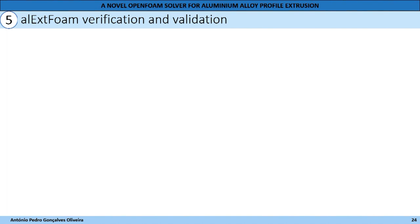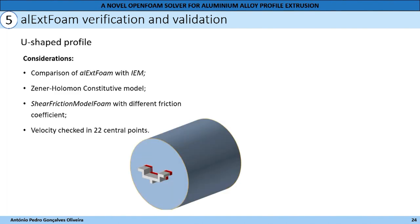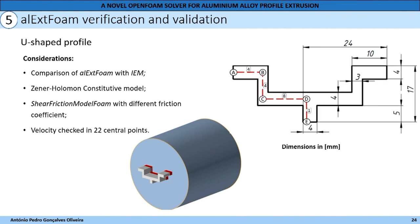Now, the OpenFOAM verification and validation. We will start with the U-shaped extrusion profile, where the goal is to compare OpenFOAM with the Inspire Extrude Metal software. In both cases, the Zener-Hollomon constitutive model was used. However, as a student license was used, the Inspire Extrude Metal software does not allow selection of friction models, so several simulations were carried out with different friction coefficients in order to identify which solutions are closest. The velocity was checked at 22 central points at the outlet between A and E, equally spread across the profile. Also, a symmetry boundary condition was used in the simulations.